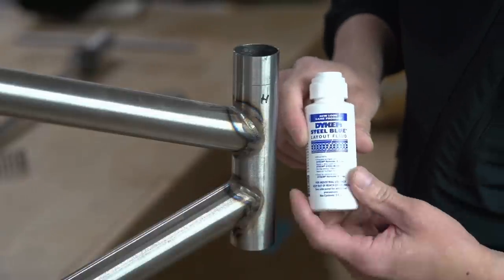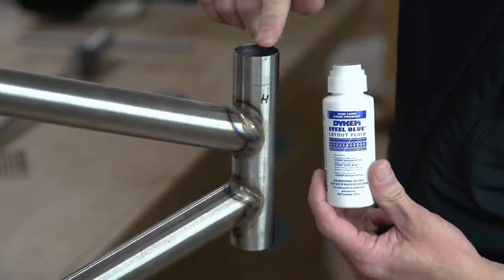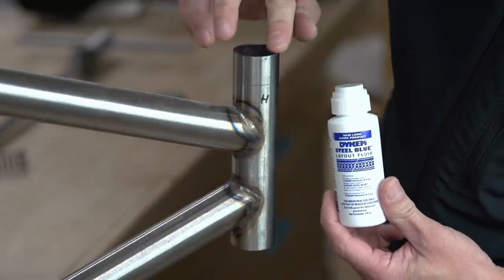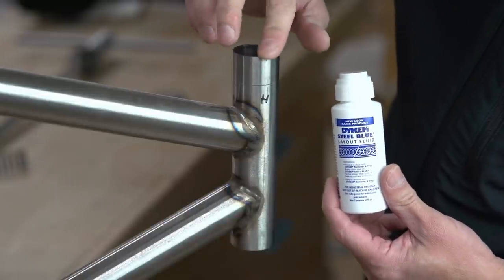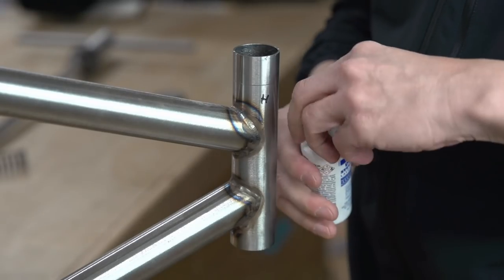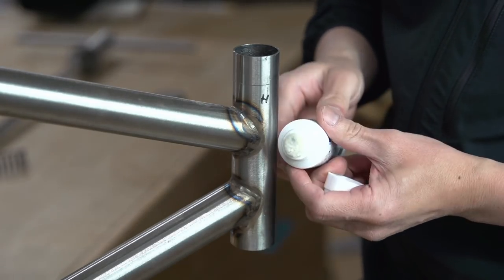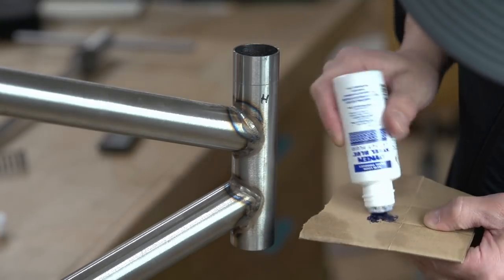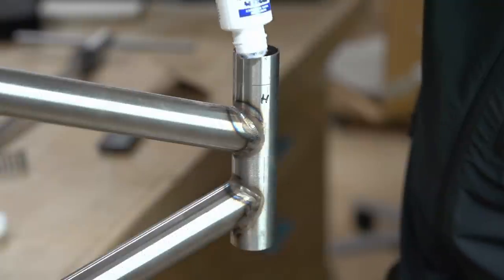Someone mentioned applying this stuff in the last facing video to the surface so that when I face it, I can see what areas are done by how much ink is removed.